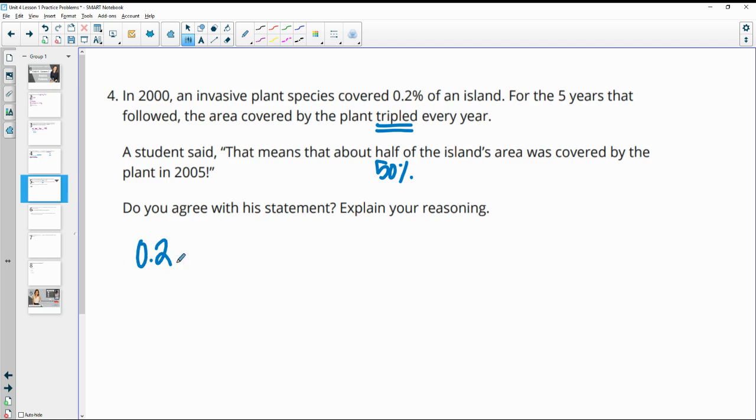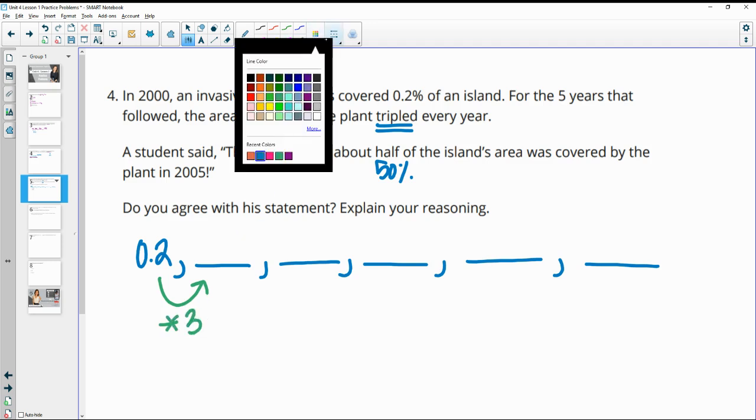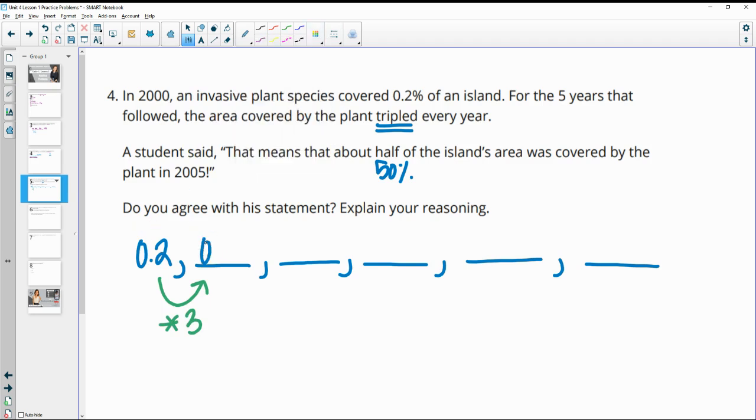So in the first year in 2000 we were at 0.2. So we're going to look at 2001, 2002, 2003, 2004, and 2005, remembering that each year we triple. So we're multiplying by 3 every time. So 0.2% times by 3 is 0.6%. 0.6 times 3 is 1.8%. 1.8% times 3 is 5.4%. 5.4% times 3 is 16.2%. And then 16.2% times 3 is 48.6%.